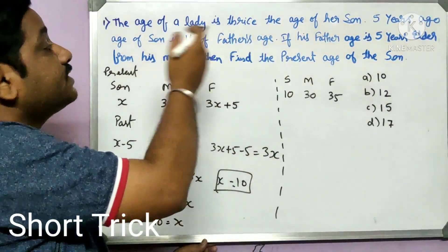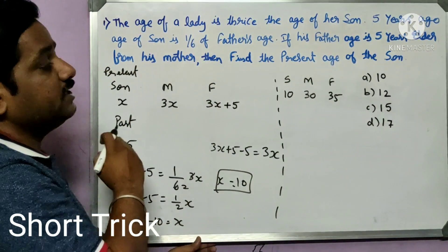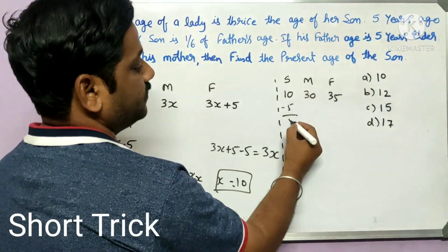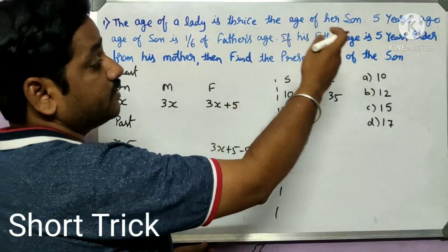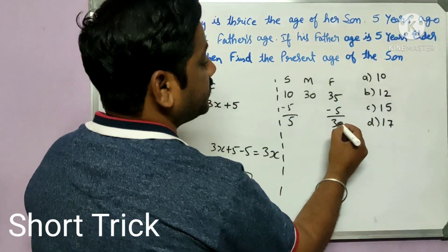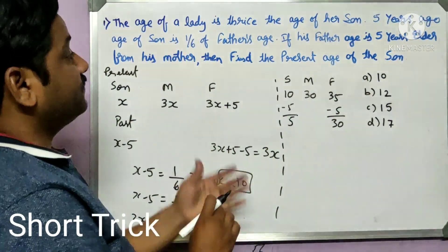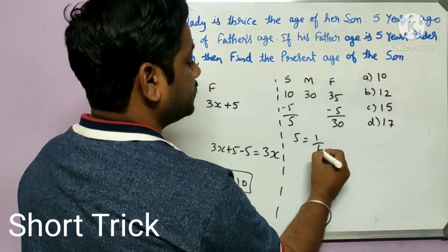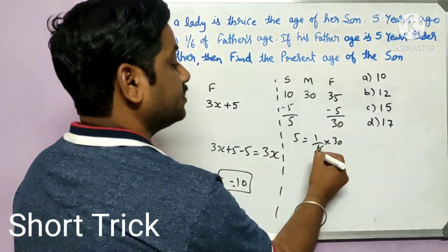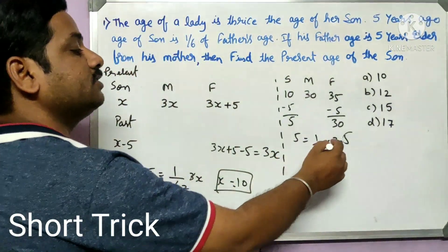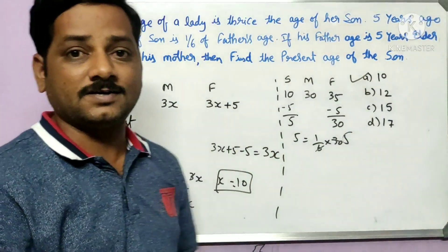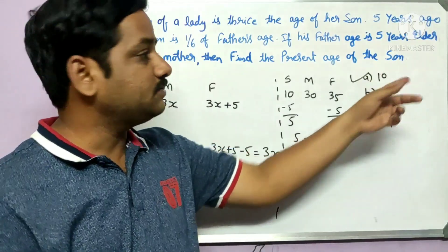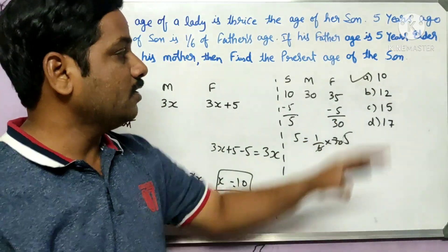Five years ago, the son's age would be 5, and the father's age would be 30. The condition says the son's age should equal one-sixth of the father's age. Check: 5 = (1/6) × 30 — yes, that matches! So the first option is correct. Without forming any algebraic expressions, you can get the answer just by testing the options against the conditions.